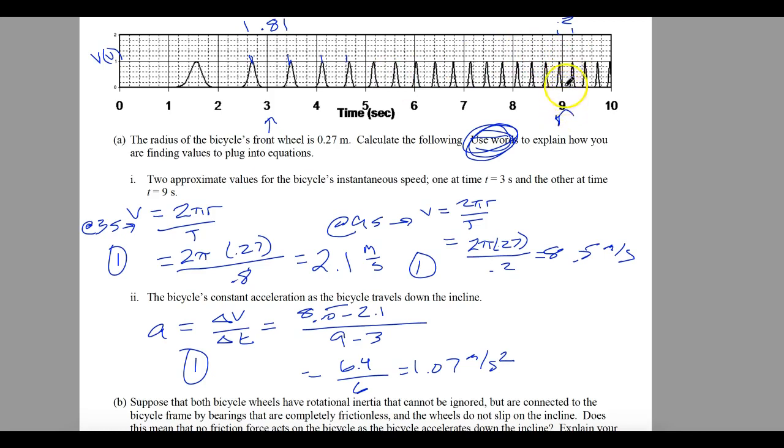This one over here for 9, the difference between these two is about 0.2. So I'm going to do 2πr over 0.8, and that's equal to 2.1 meters per second. And that would be at 3 seconds. That is the instantaneous velocity.